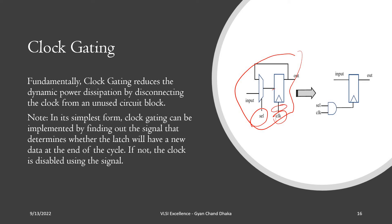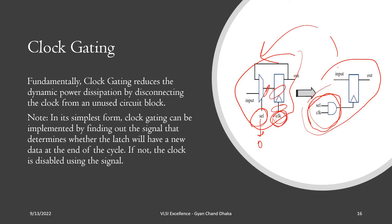Even when the selection line is 0 — meaning the output stays at the previous value — the clock is still applied directly to the flip-flop, causing unnecessary switching. We don't want the flip-flop to function when there is no data change. By gating the clock with the selection line using an AND gate, the clock only reaches the flip-flop when real new data must propagate to the output. The circuit functionality remains the same, but the clock switching is minimized, resulting in reduced dynamic power dissipation.